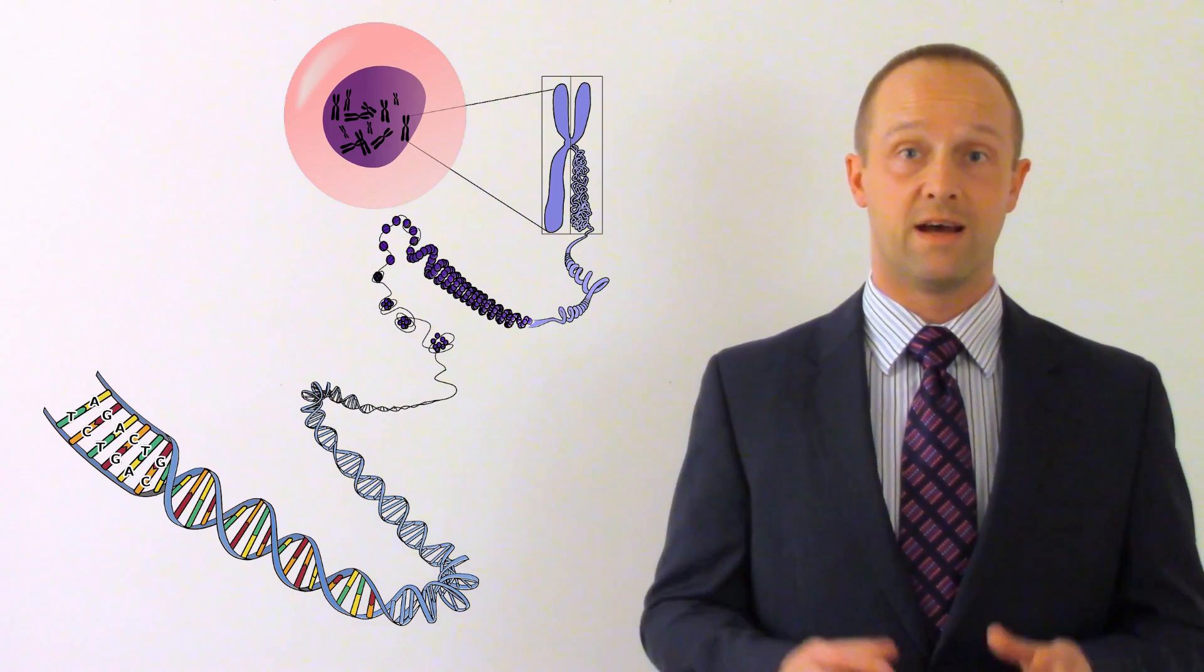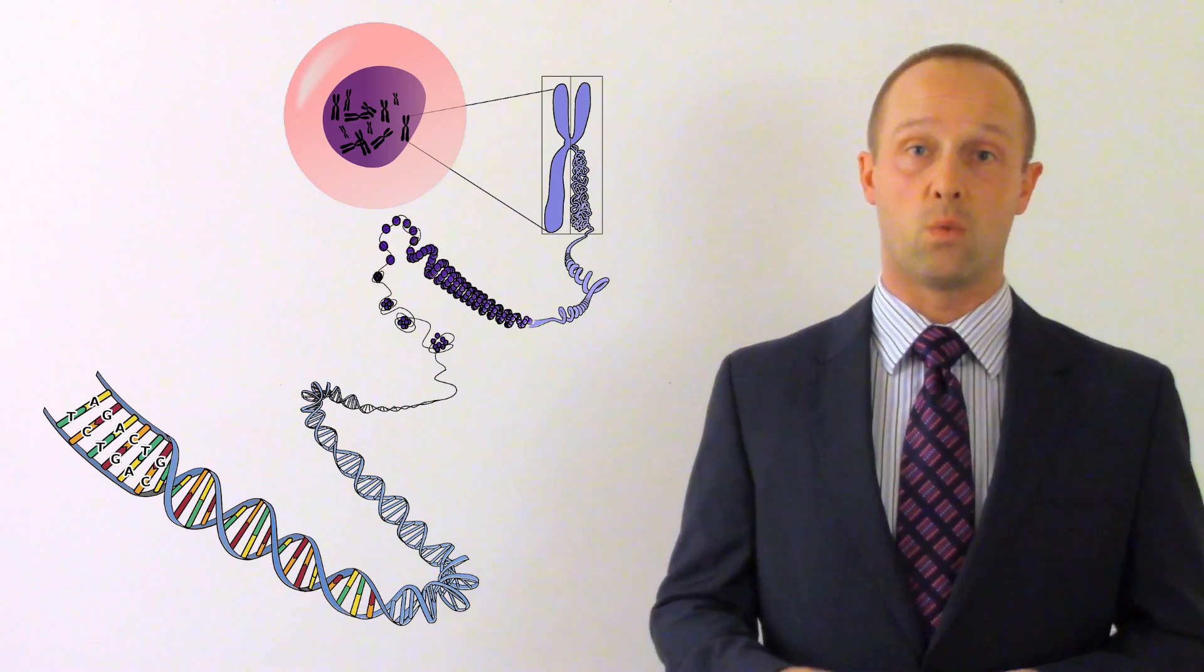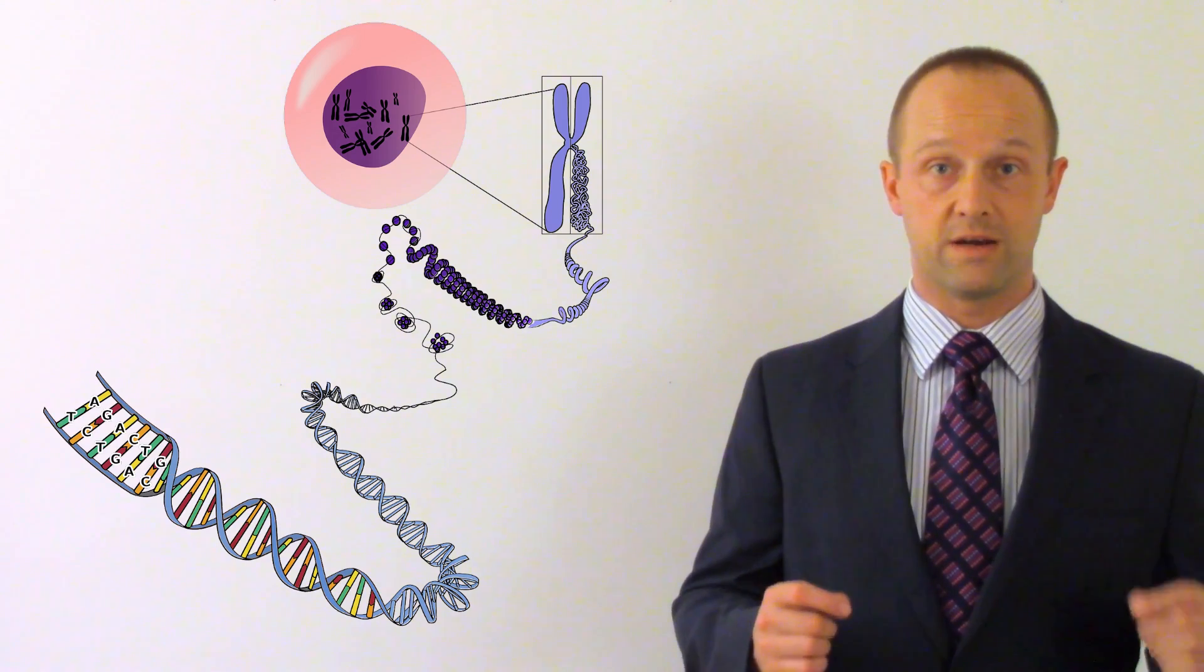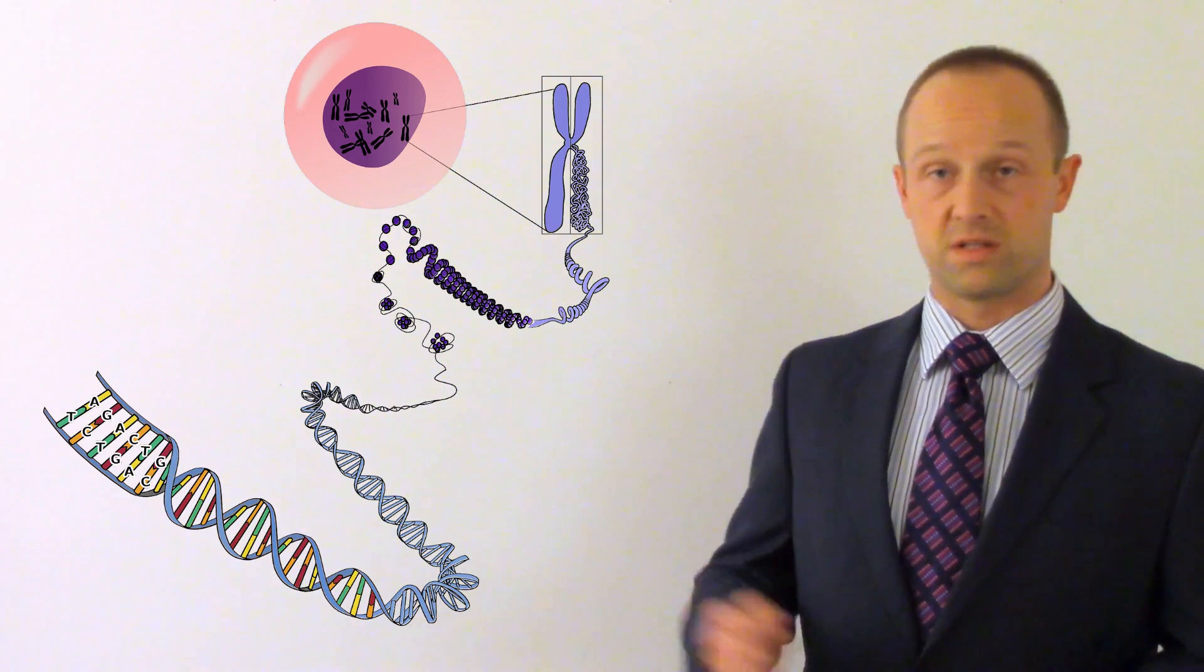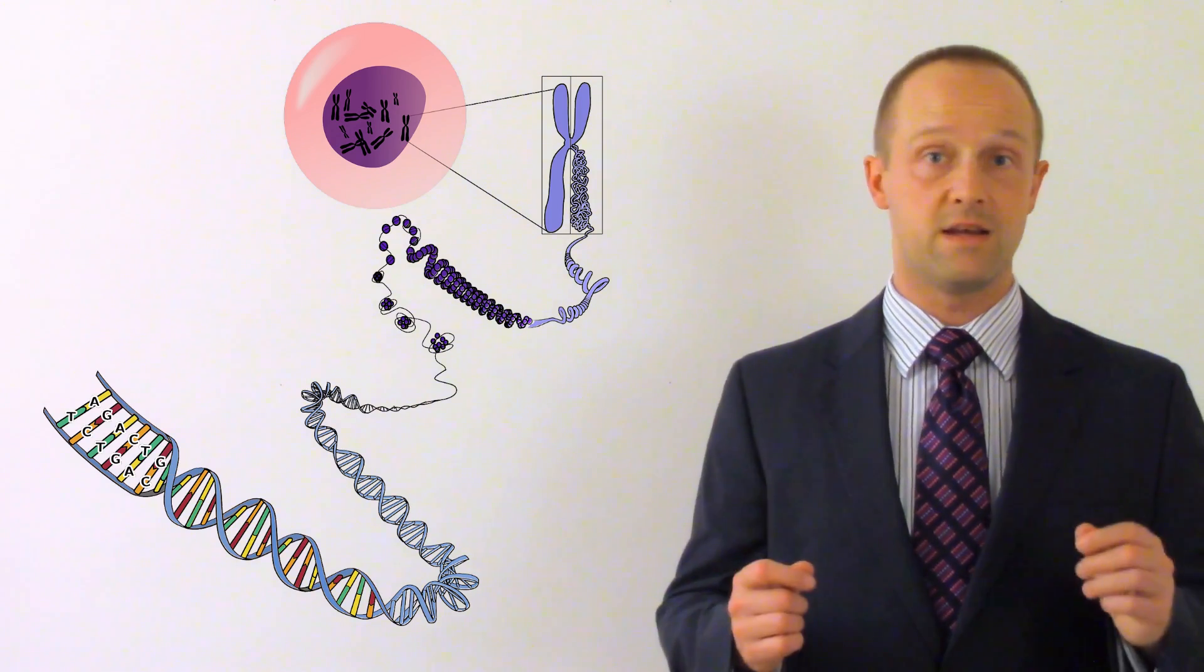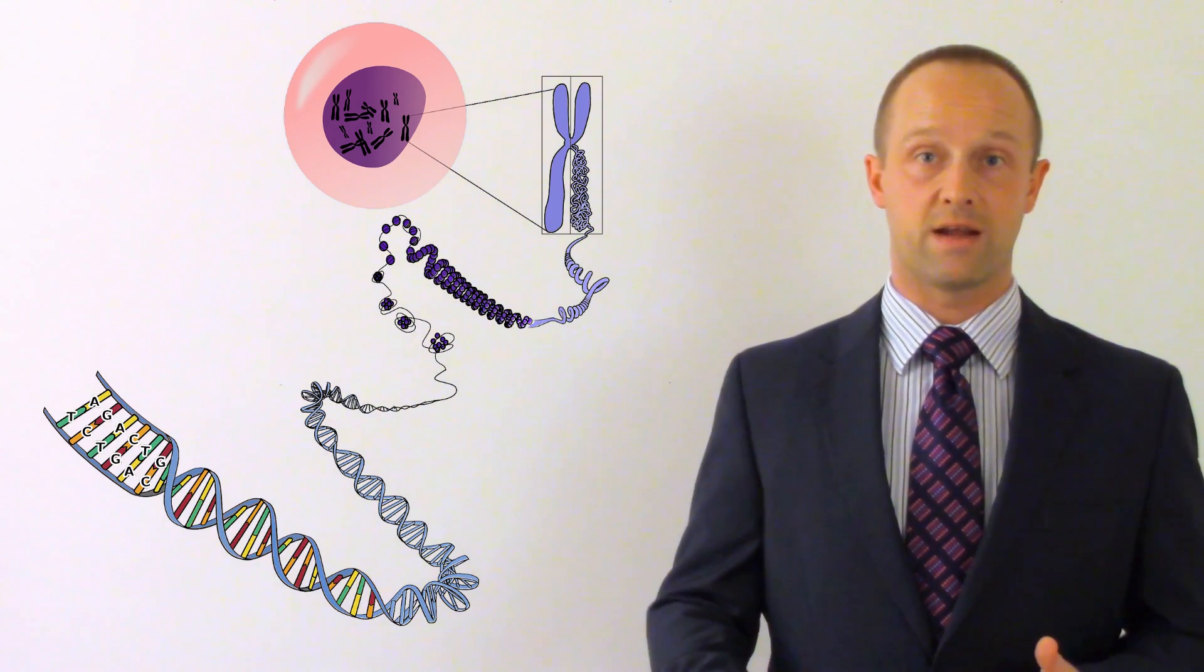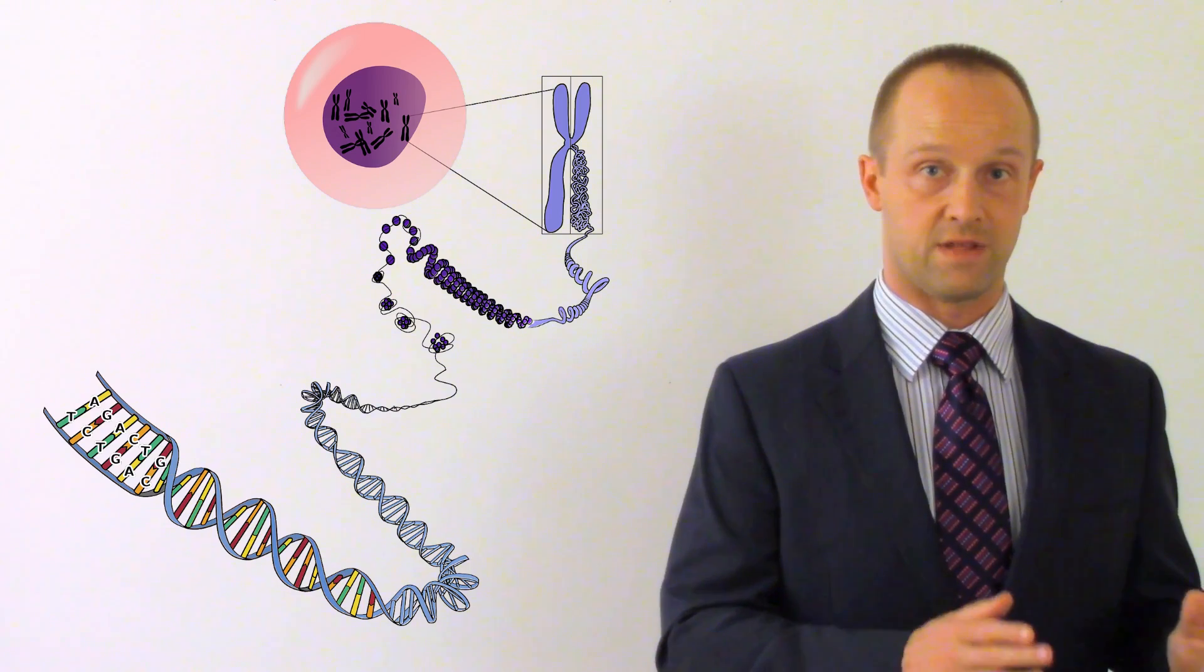Likewise, guanine and cytosine only stick to each other. So if you've got one side of the ladder that starts with an A, then the other side of that rung should always be a T. If you've got one side that starts with a C, then the other side should always be a G, and so on. So this way you get a code on one side that sets the code on the other side of the ladder.